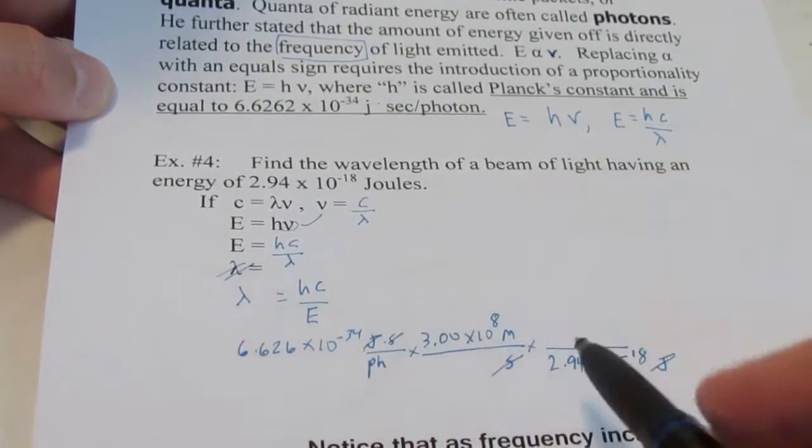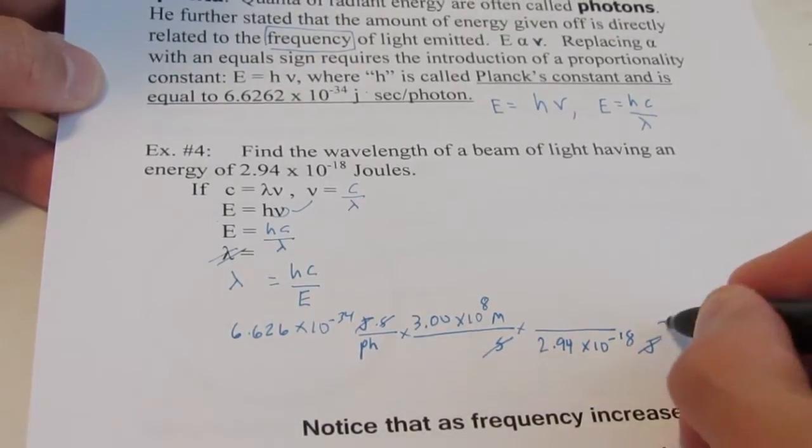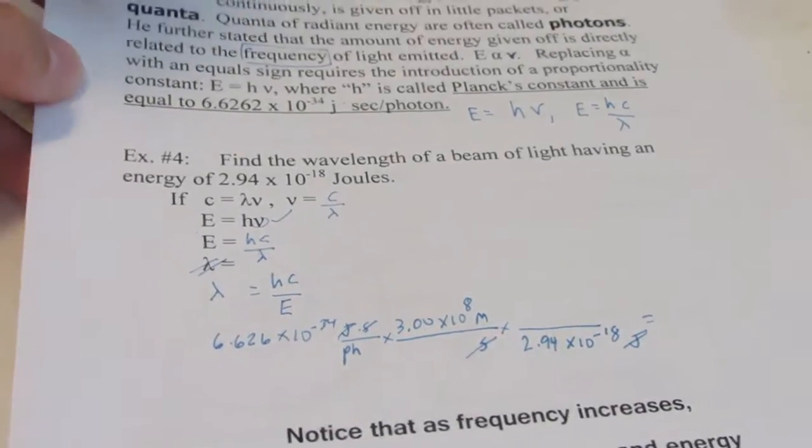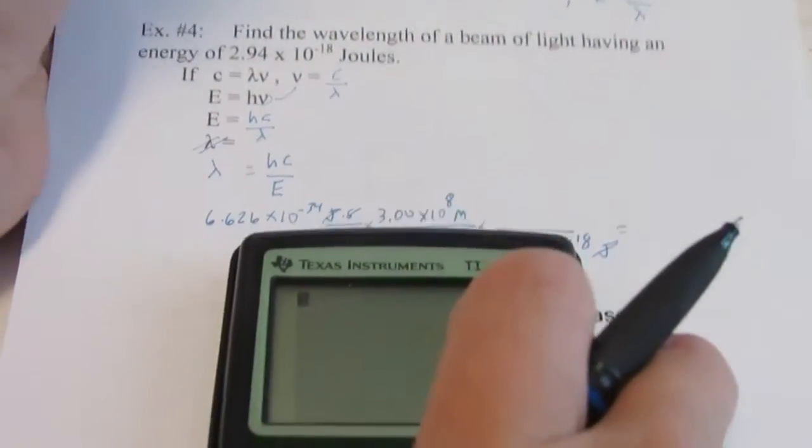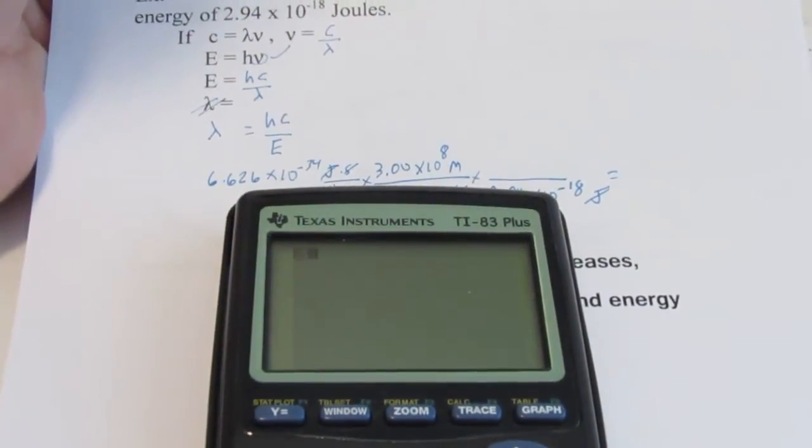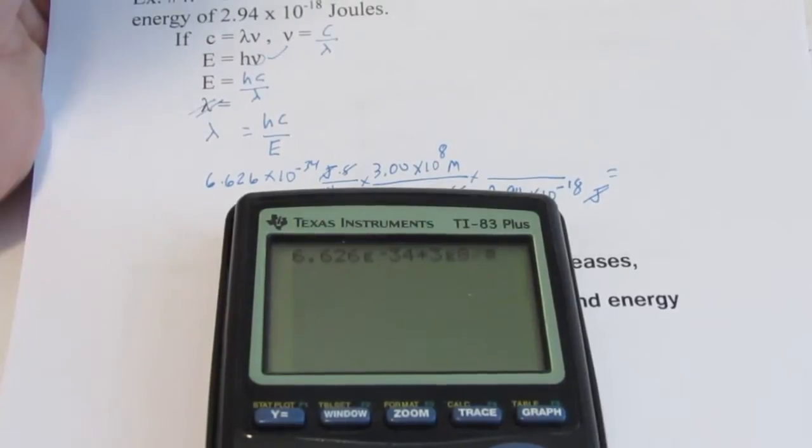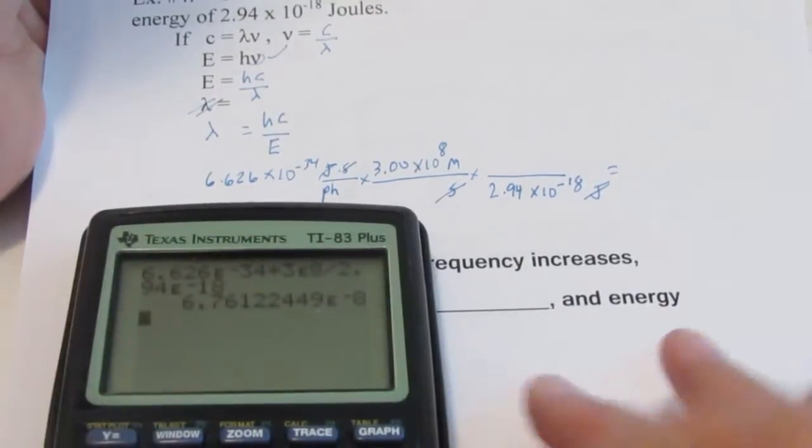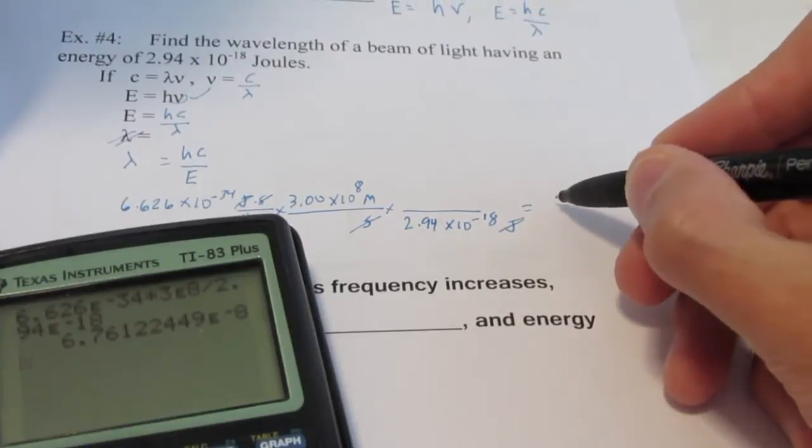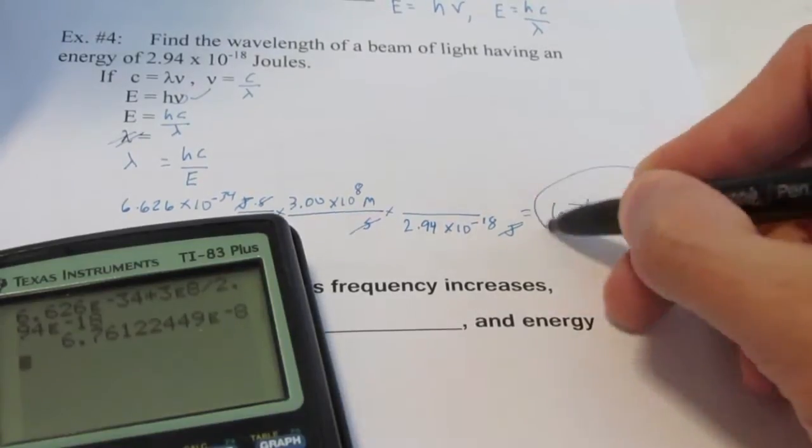So let's pull out our calculator here. You guys should be good at this now. So we have 6.626 second EE to the negative 34th, times 3 second EE to the 8th, and we're going to divide by the energy, 2.94 second EE to the negative 18th. And that gives us a wavelength of 6.76 times 10 to the negative 8th meters.